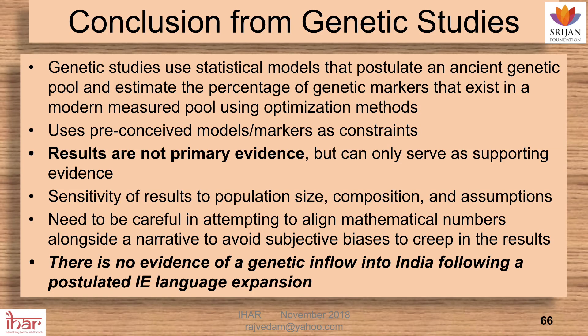Then the composition: am I going to take data from the IT park in Gurgaon, or am I going to say you must be living in the same place as your grandfather for me to take your data? And the size: if I am going to talk about the genetic profile of the Indian population, am I going to take 1,000 Brahmins and about 10 Shudras and say I have the genetic profile of Indians? It is a problem. What percentage are you going to take? Because of endogamy, we have certain differences. You need to be careful when attempting to align mathematical numbers alongside a narrative and avoid subjective biases creeping into the result.